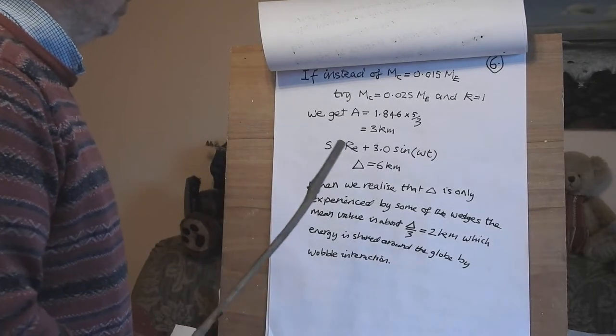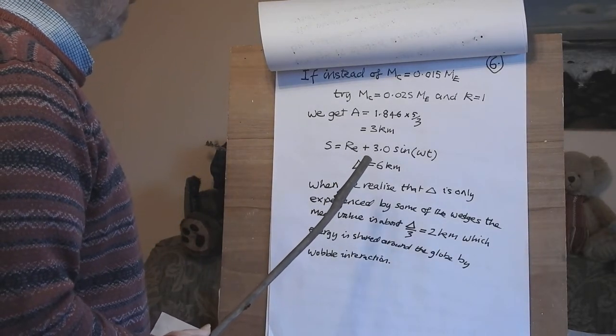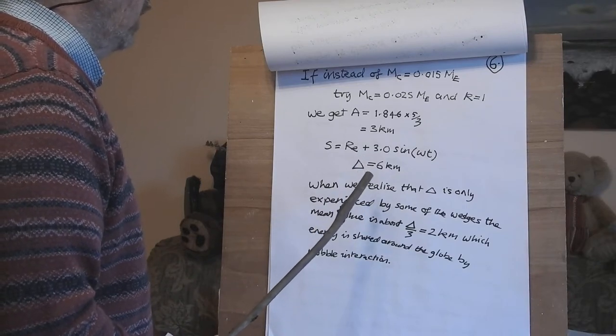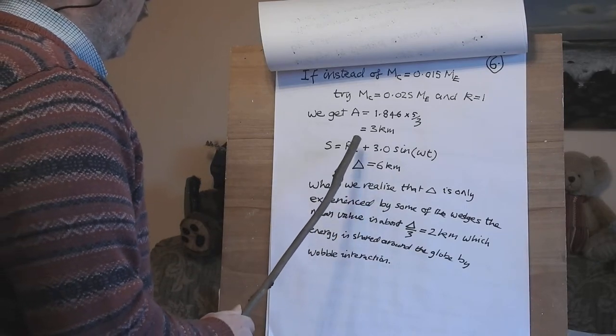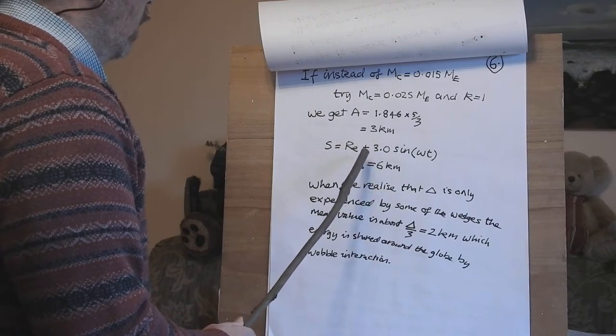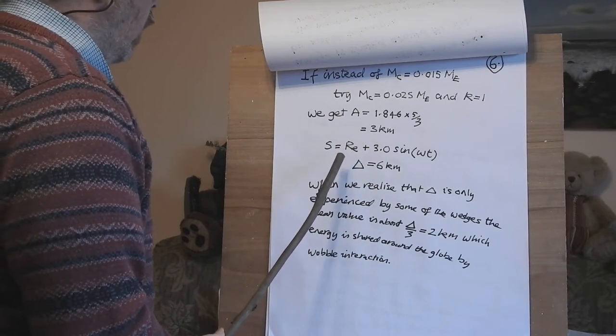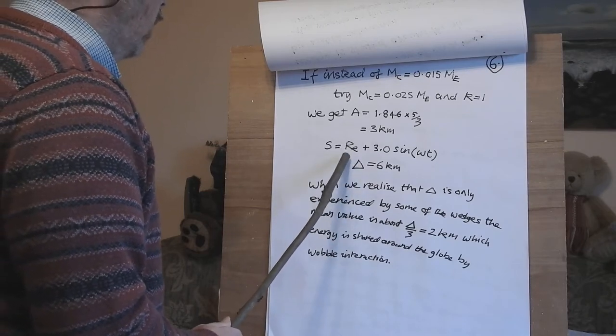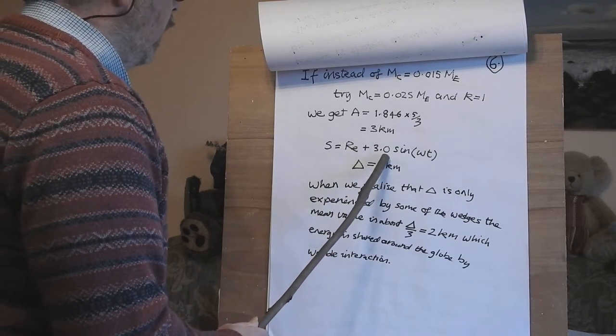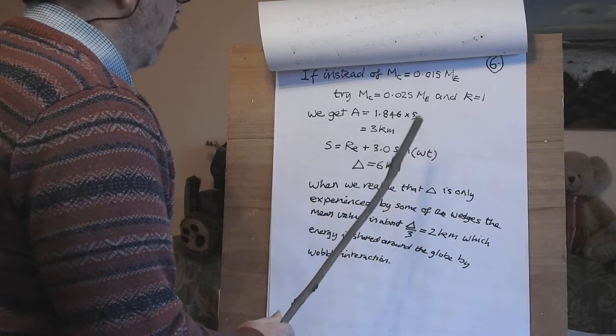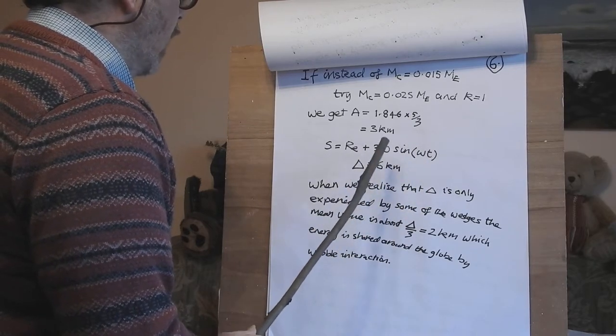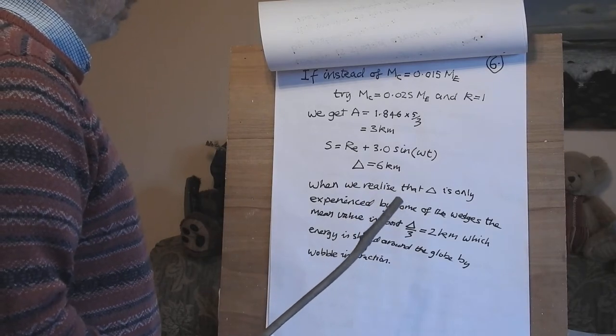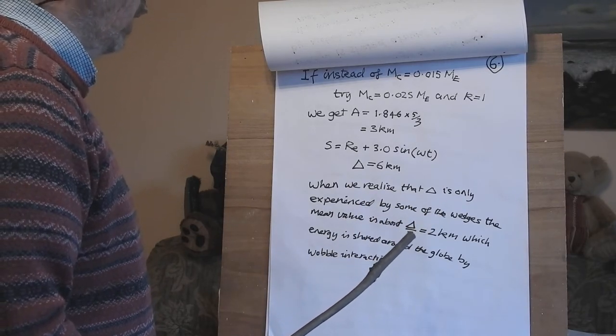I think instead of mc equals 0.015 me, try mc equals 0.025 me and k equals 1, we get a equals 3 kilometers. So your equation is s equals radius of the earth plus 3 kilometers sin omega t. So the difference is 6 kilometers, which is a big height, nearly the height of Everest.